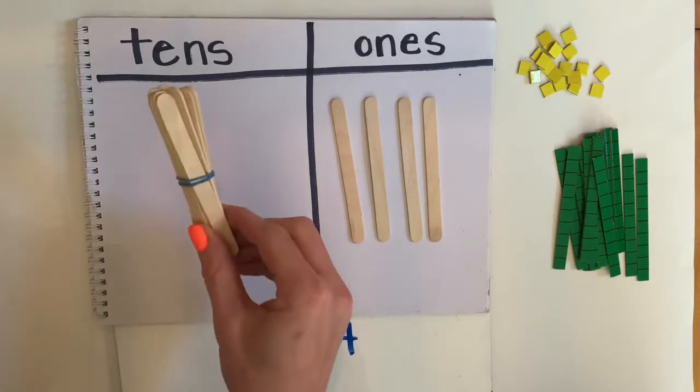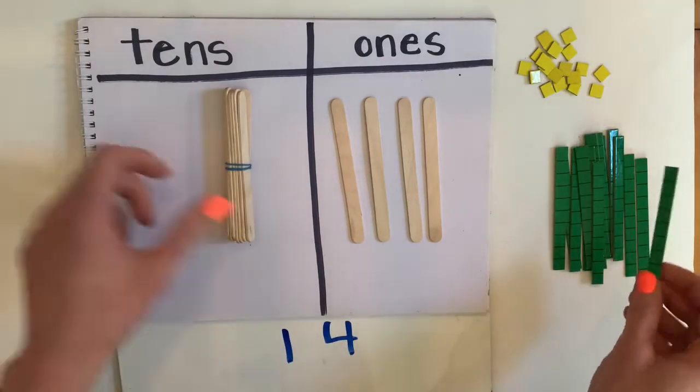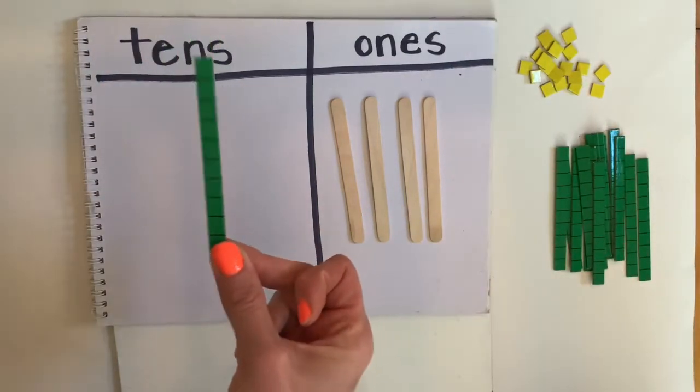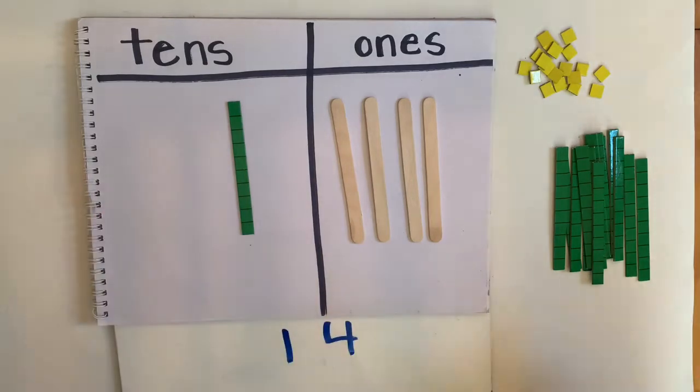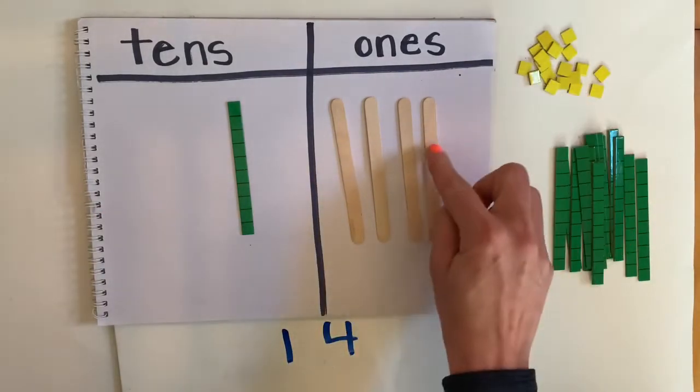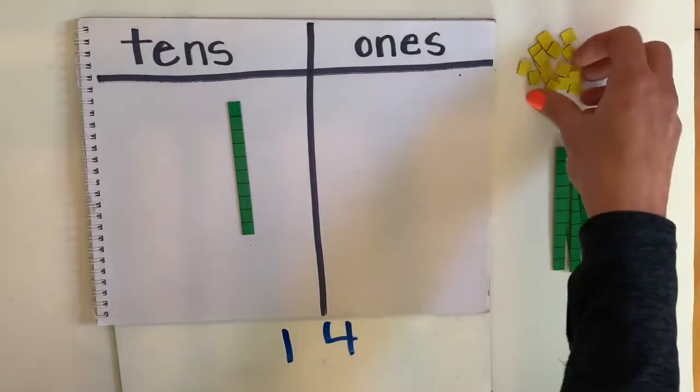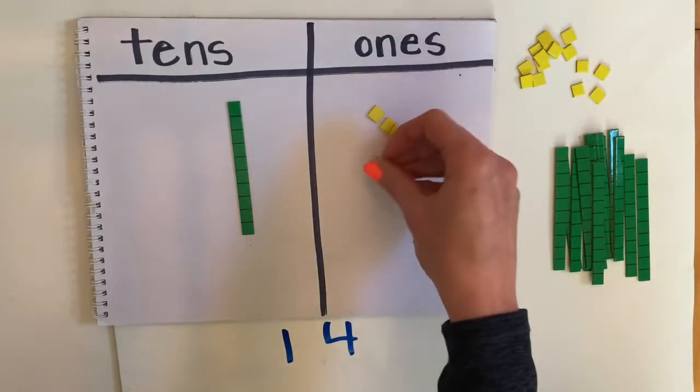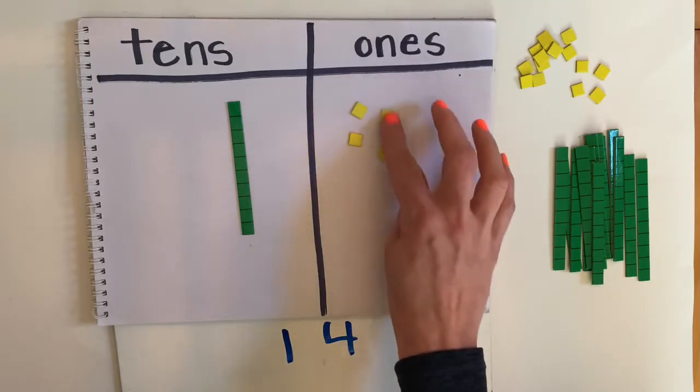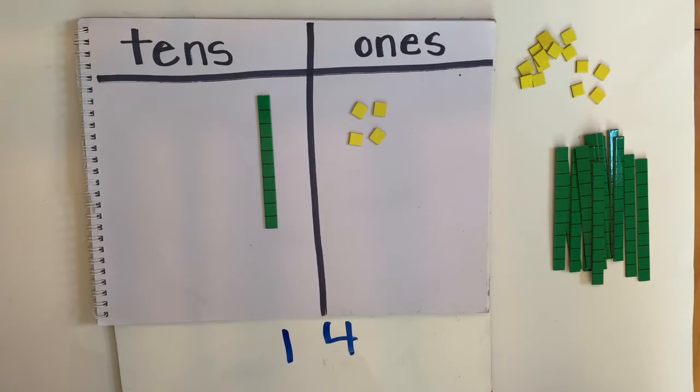But we're not going to use our bundles anymore. This 10 sticks bundled together, we're going to change and use a base 10 ten. So this also represents 10. There are 10 squares in there. There are 10 of these little squares actually. And these are my 1, 2, 3, 4, my ones or my units. We're going to use four ones like this now. There we go. So this is my base 10. That's 14 with my base 10 blocks.